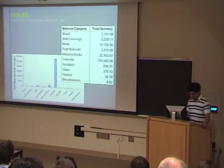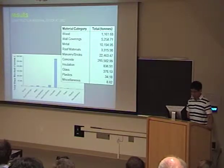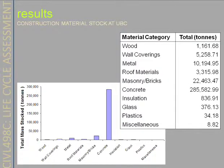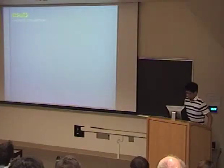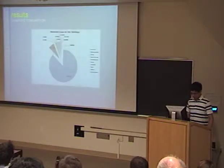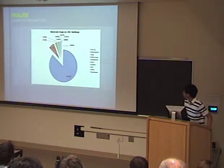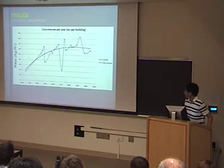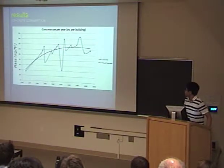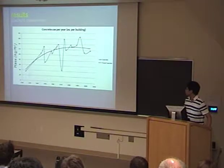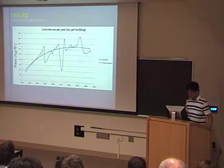Here is the construction material stock at UBC. As you can see, most of the materials we use is concrete, followed by masonry, block, and bricks. Looking at the pie chart and graph, in recent years UBC has decreased its use of concrete.